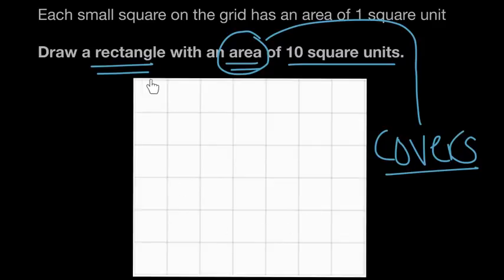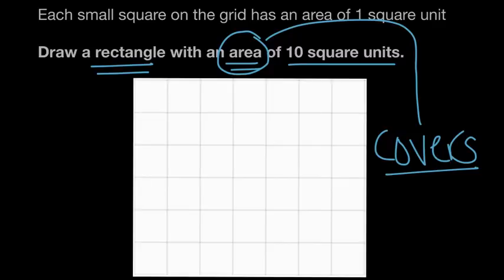We could try just drawing a rectangle right across the top row until we get 10 square units, but the problem is there are only seven square units going across the top. So we can't just do one long row of 10 square units.